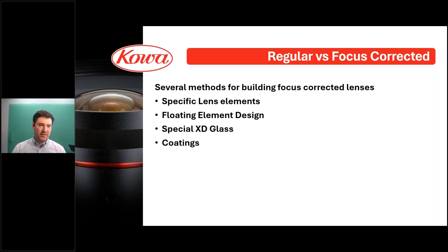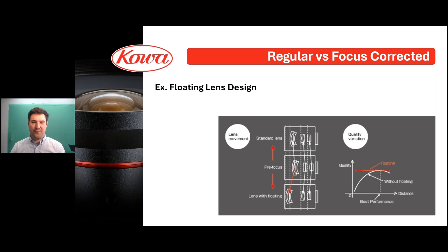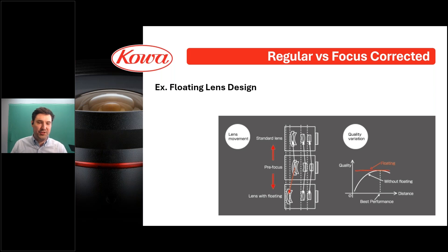One thing I want to highlight is regular versus focus-corrected lenses. Several methods used for building focus-corrected lenses include specific lens elements, floating element design, special low-dispersion glass, and specialized coatings. The floating mechanism design, used in many of COA's CCTV and machine vision lenses, varies the distance between lens elements as you change focus. This helps achieve the highest performance at various object distances and can significantly improve wide-spectrum imaging performance.